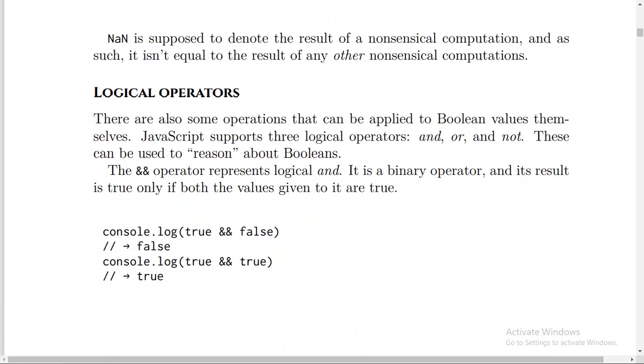What about the logical operators? There are also some operations that can be applied to Boolean values themselves. JavaScript supports three logical operators: AND, OR, and NOT. The AND operator represents logical AND. It's a binary operator. Its result is true only if both the values given to it are true.